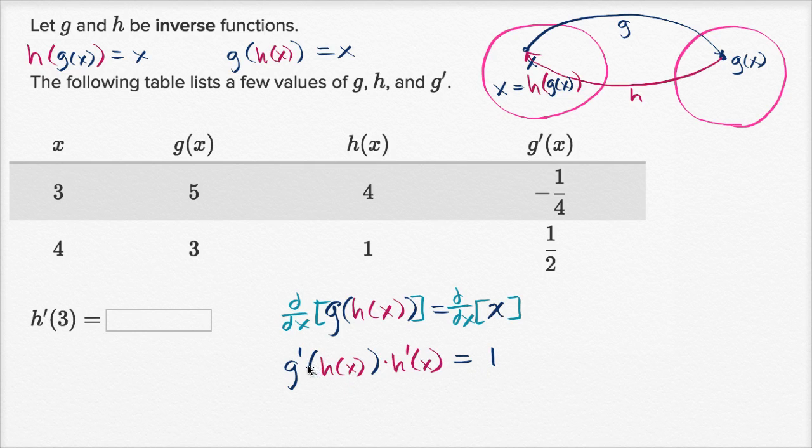Now it's interesting. We need to figure out what h prime of three is. We can figure out what h of three is, and then we can use that to figure out what g prime of whatever h of three is. And so we should be able to figure out h prime of x.